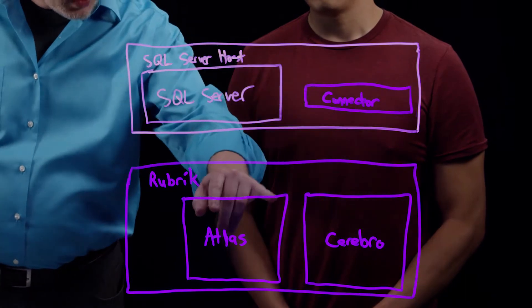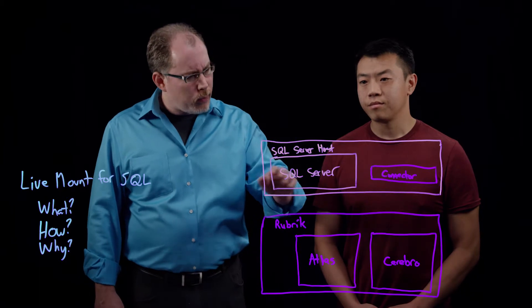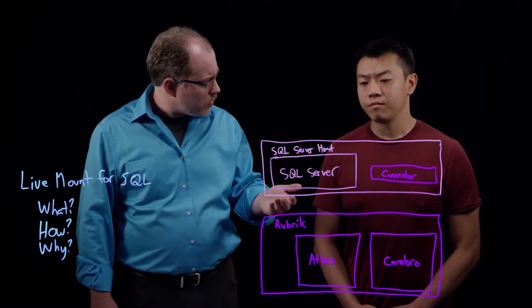pulls the data down into Rubrik, tracked by Atlas and Cerebro. But from that point, the restore process could still take a while for large databases, right?